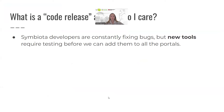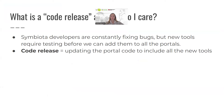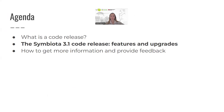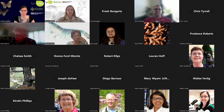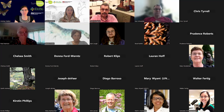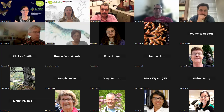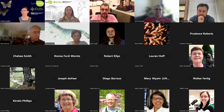Symbiota developers are constantly fixing bugs as we find them, but new tools require testing before we can add them to all portals — that's why we've been slowly rolling this out rather than pushing everything to everyone immediately. The code release updates each portal's code to include all of the new tools eventually. If you manage your own Symbiota portal, you have access to the new code in GitHub and can bring it in yourself.